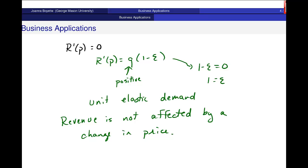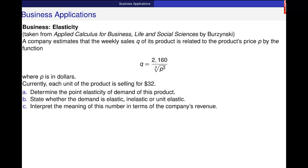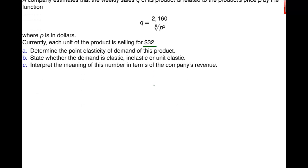This is point elasticity. When you calculate this number, it doesn't tell you the elasticity across the entire function, it's telling you elasticity at a point. So let's go through and answer some questions about this particular problem. A company estimates that weekly sales Q of its product is related to the product's price by this function. Currently each unit is selling for $32, and the function is 2160 divided by the fifth root of p cubed.